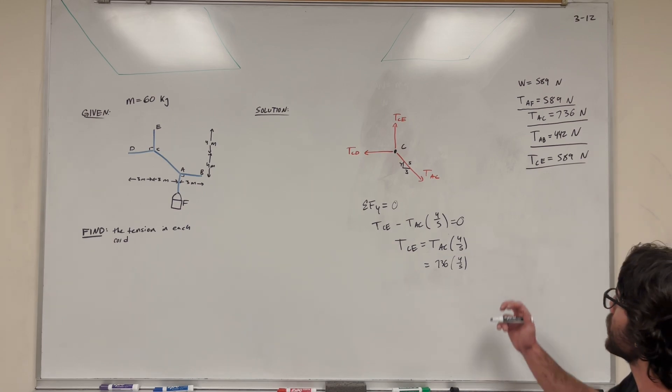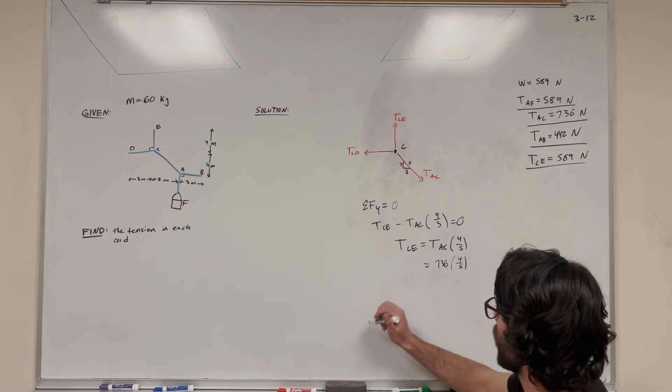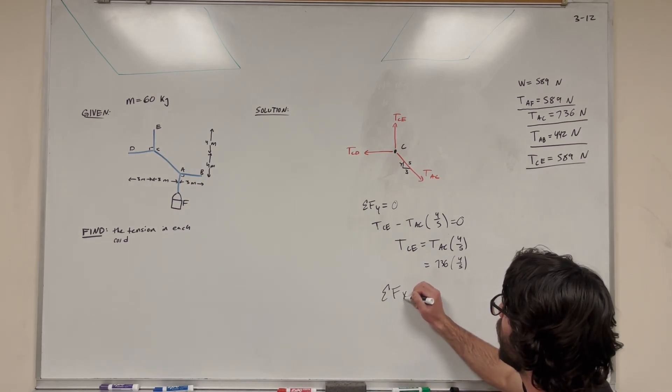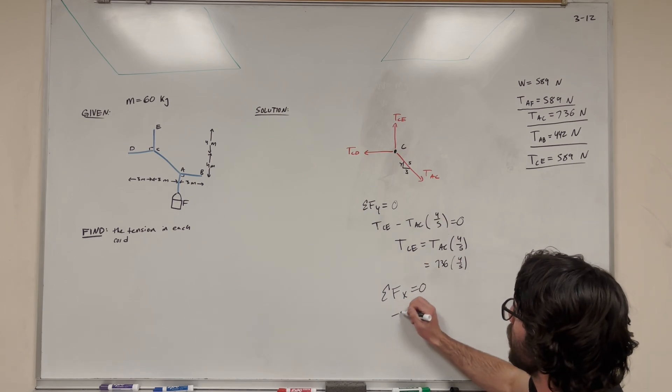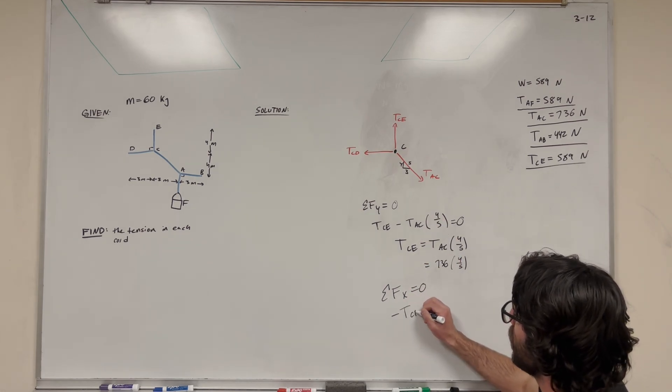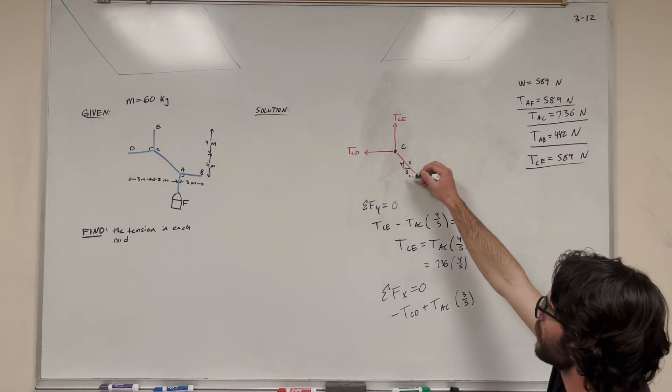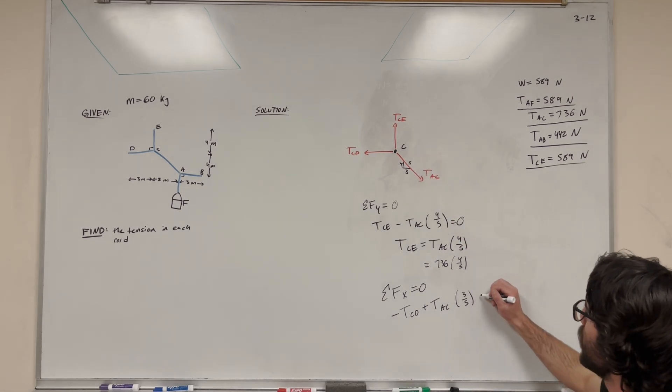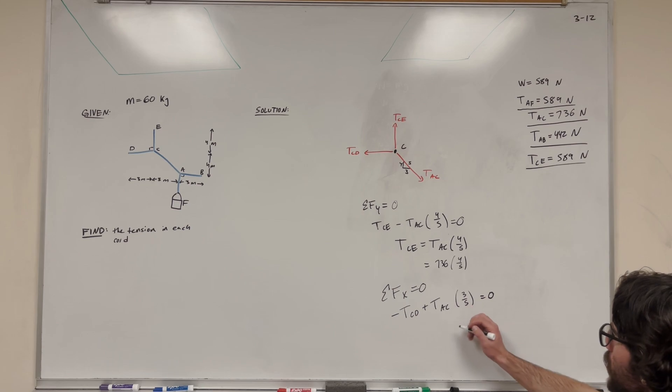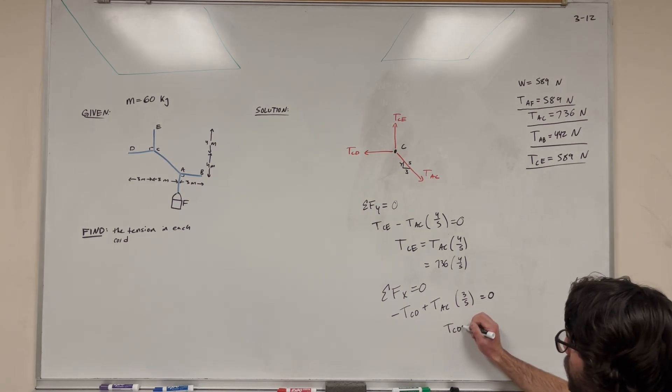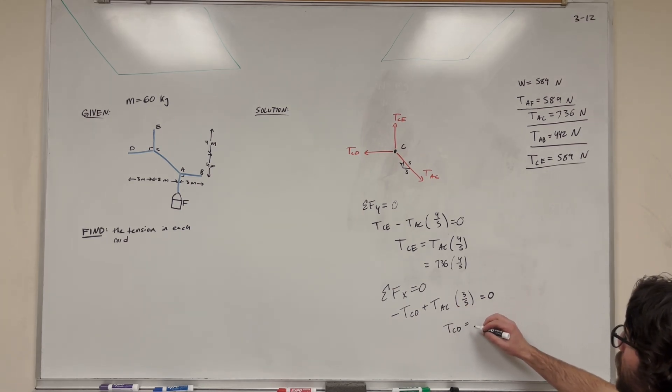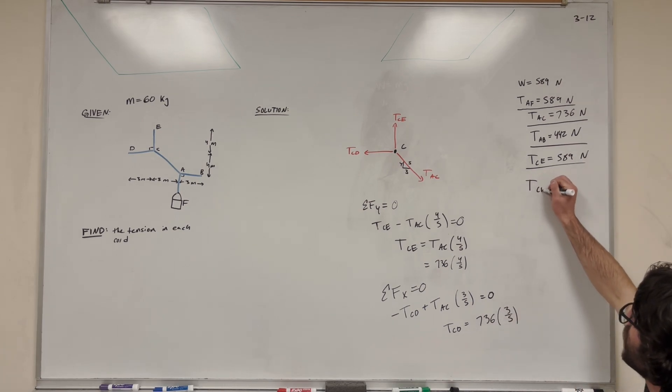Let's do sum of the forces X next. Sum of forces X is equal to 0. We're going to get negative tension CD plus tension AC times 3 fifths. 3 fifths is the ratio in the X direction for this. Set it equal to 0. Of course, we're going to do the same thing. Tension CD. Add this to the other side. Tension AC, 736 newtons times 3 fifths.